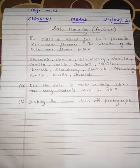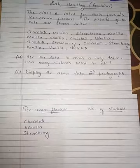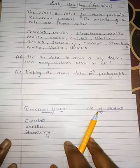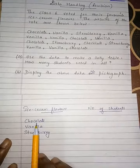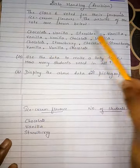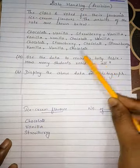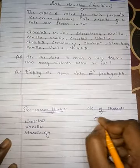Let us find how many people like each flavor. The table has two columns: ice cream flavor and number of students. For chocolate, counting the votes: 1, 2, 3, 4, 5. Chocolate has 5 students.